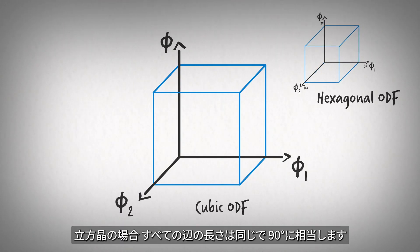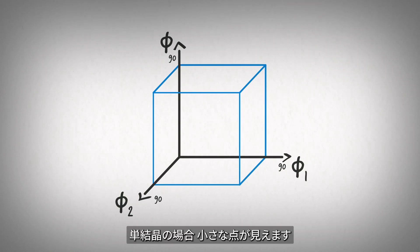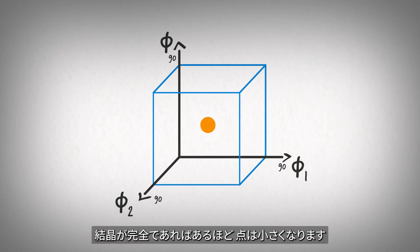The ODF is often imaged as a box shape with the length of sides depending on crystal symmetry. In the case of a cubic crystal, all sides are the same length of 90 degrees. The orientation of each crystallite in the sample is mapped into this box. In the case of a single crystal, a small spot is seen. The more perfect the crystal, the smaller the spot.